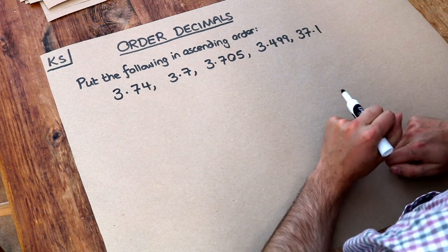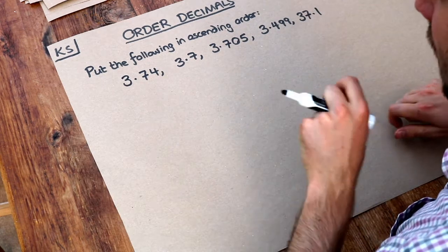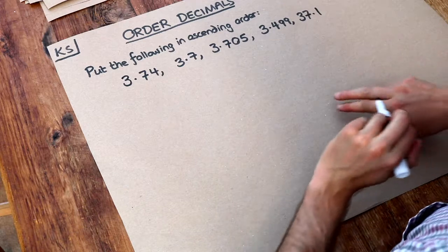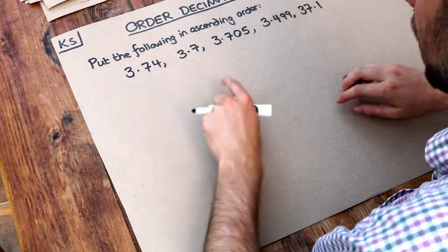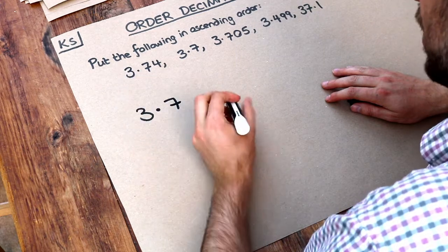Now we use exactly the same strategy as if we were ordering whole numbers, except we need to write the numbers in such a way that we can easily see the place value. So let's write these numbers where the digits of the same place value appear in the same column.